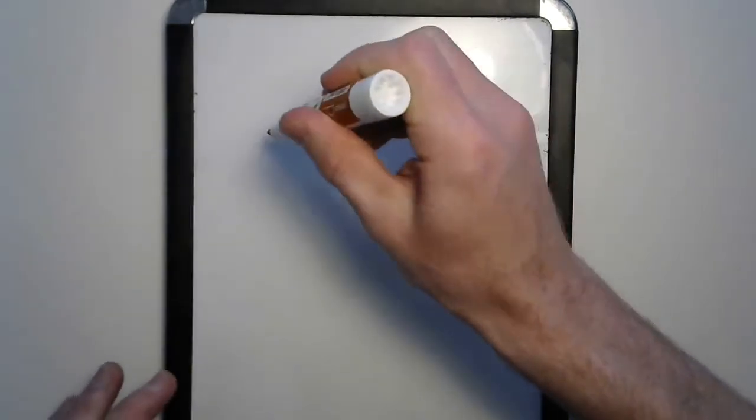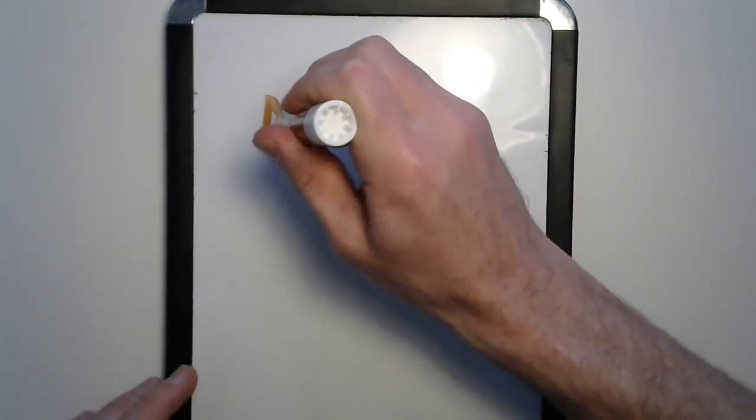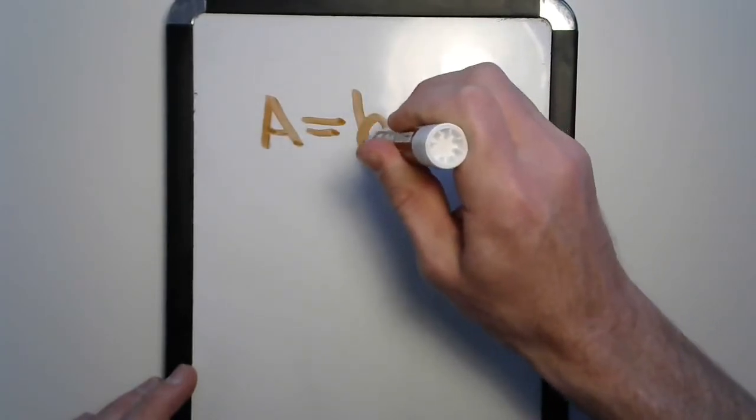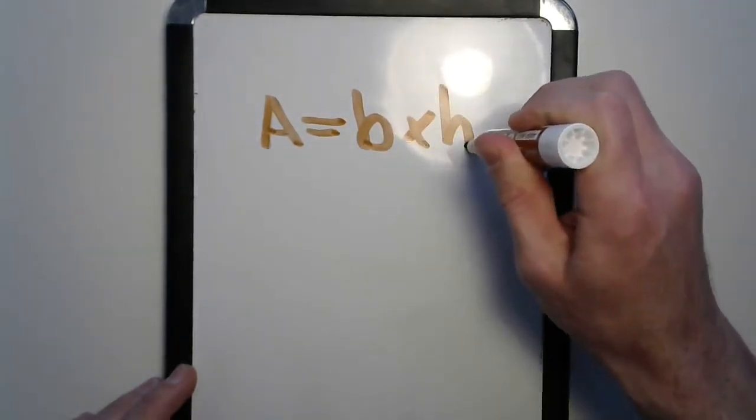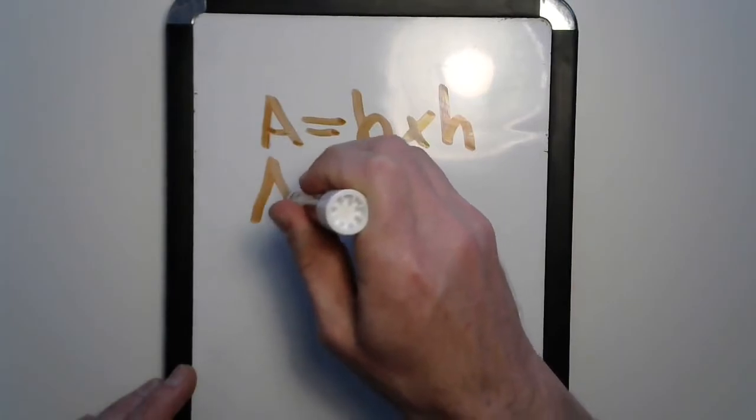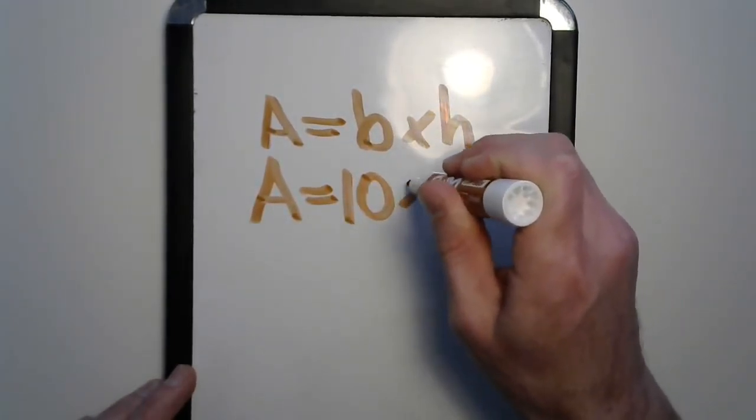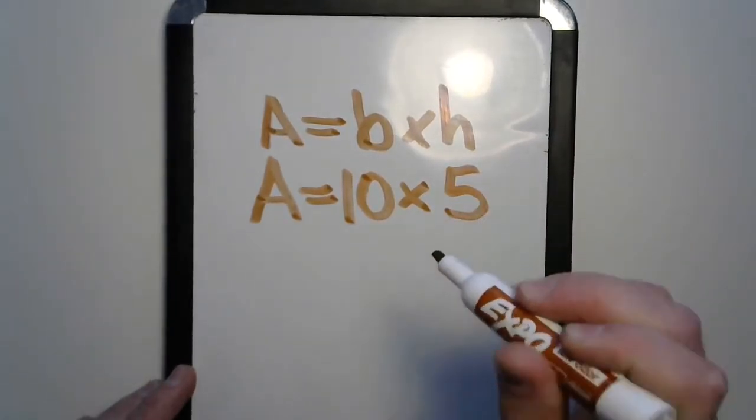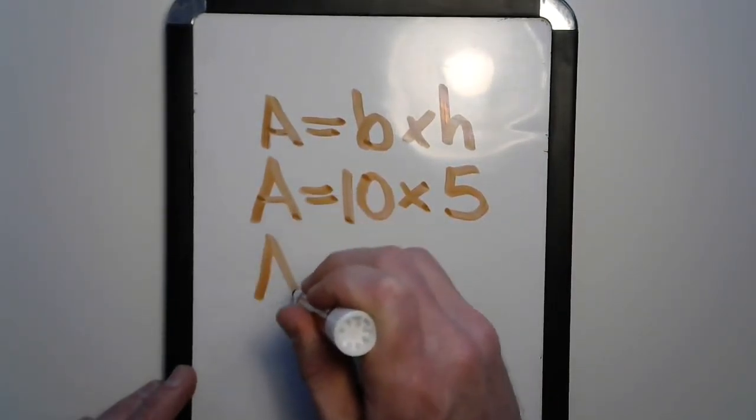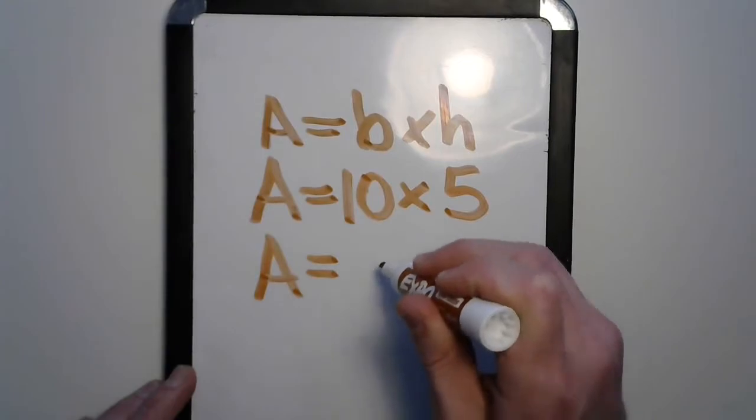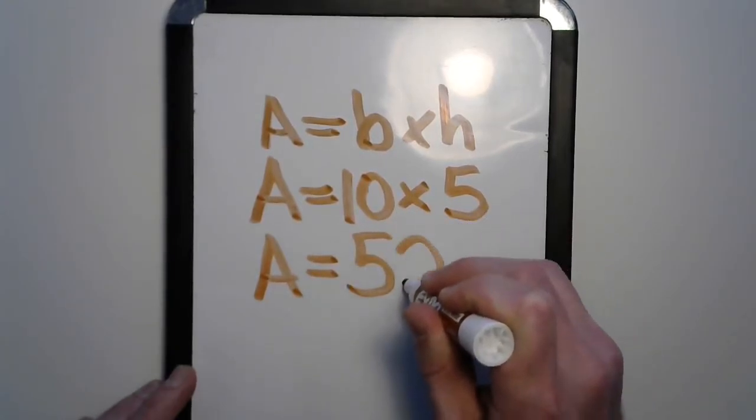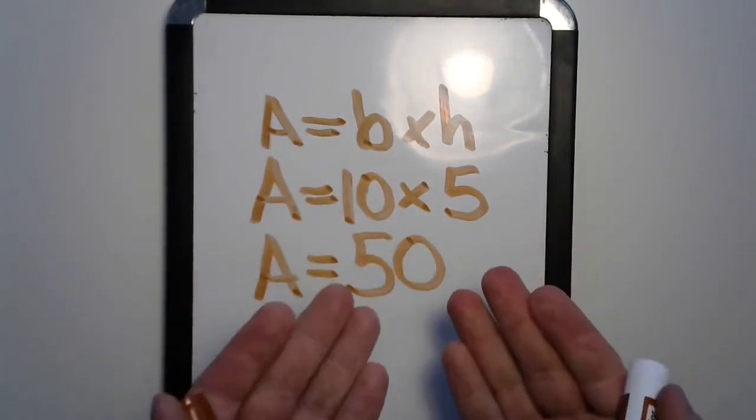Let's write our equation down again: area equals base times height. Remember, the base was 10 and the height was 5. That's a pretty easy multiplication problem to do - 50.